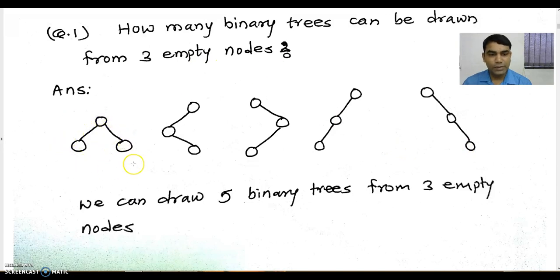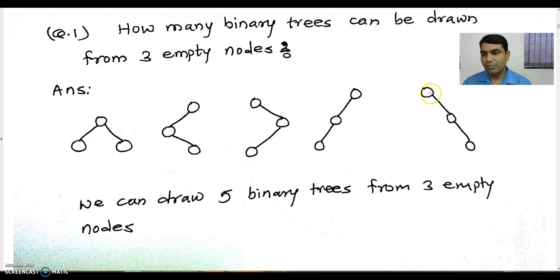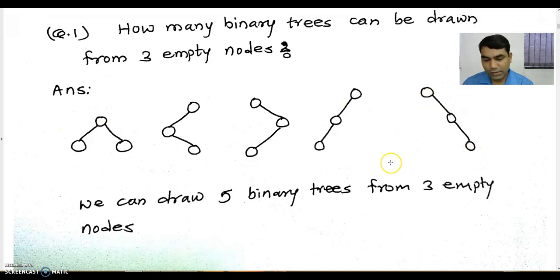We can draw 5 possible binary trees from the given 3 empty nodes. One is a balanced tree. Another is angled. The next one has nodes growing on the left side, and another tree may be growing on the right side. All these trees satisfy the rule of a binary tree — that is, a node can have 0, 1, or maximum 2 children.